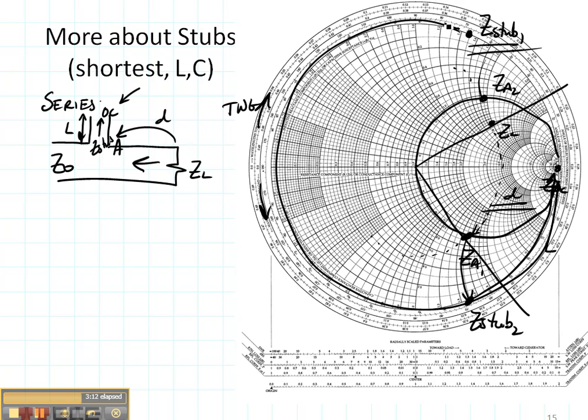Well again what I would do is I'd start out from my stub and I would rotate until I got to either a short or an open. And right here is Z of a short circuit. So my shortest length of stub and my shortest distance would occur when I had a short circuit.